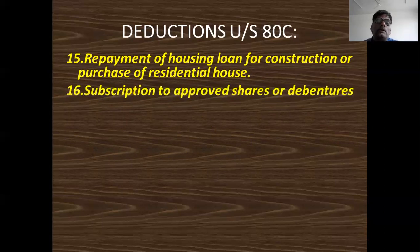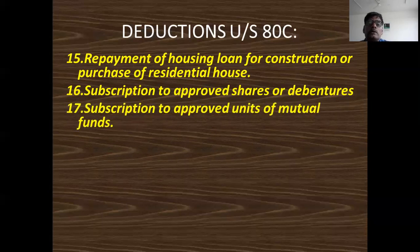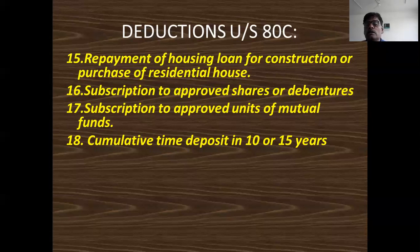The sixteenth item is subscription to approved shares or debentures. Approved means approved by the income tax department — shares of the central government, debentures of the central government, or any board. If those shares and debentures are approved by the income tax department, that amount is an eligible deduction. The seventeenth item is subscription to approved initial mutual fund. The eighteenth item is cumulative time deposit — if you deposited in a cumulative time deposit scheme for 10 or 15 years (not less than 10 years), that amount is eligible.